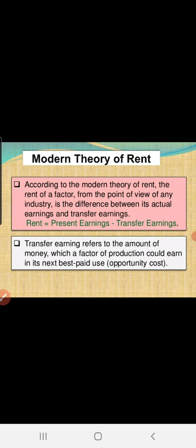According to the modern theory of rent, the rent of a factor, from the point of view of any industry, is the difference between actual earning and transfer earning. Modern economists define the rent formula as: present earning minus transfer earning. Transfer earning refers to the amount of money which the factor of production could earn in the next best paid use.